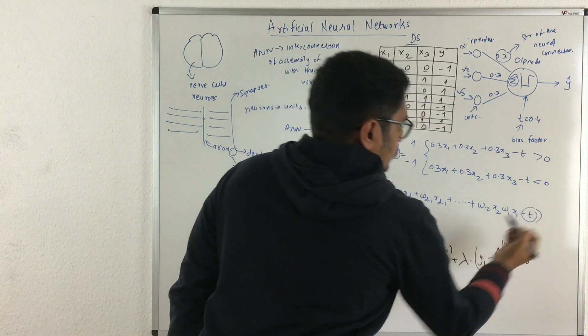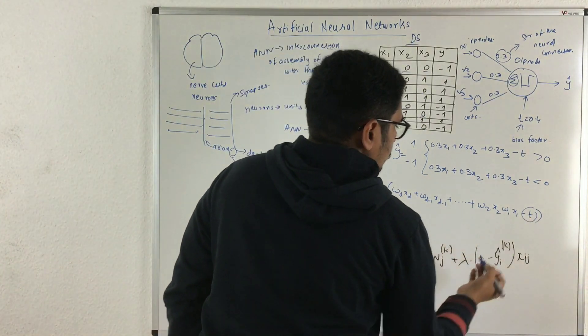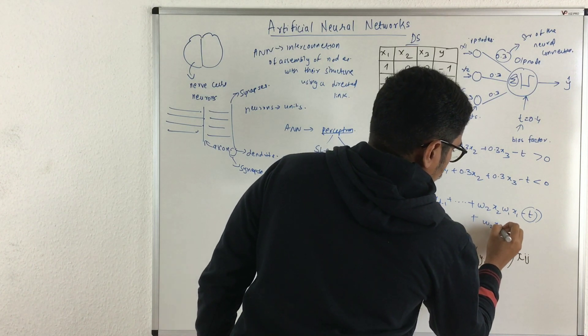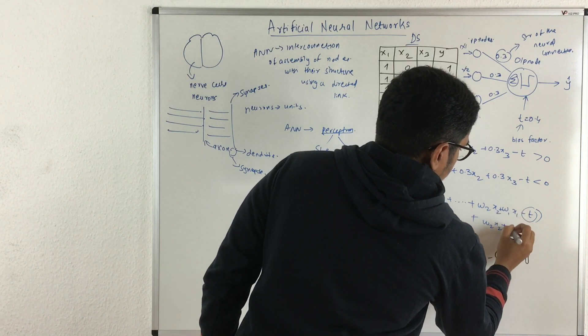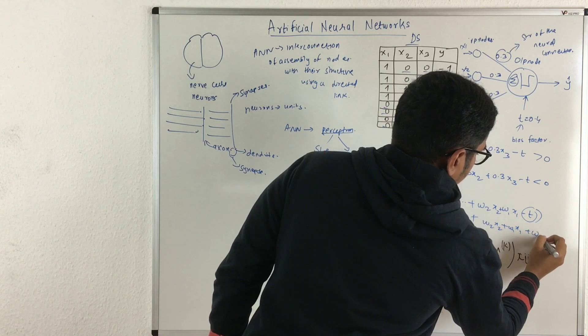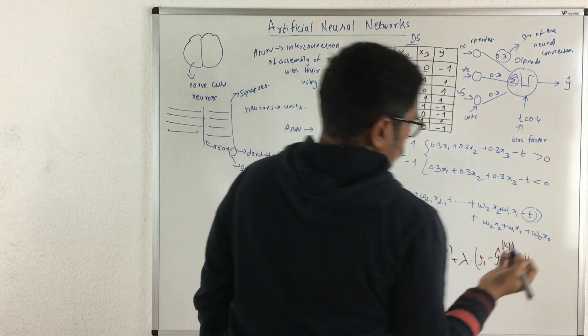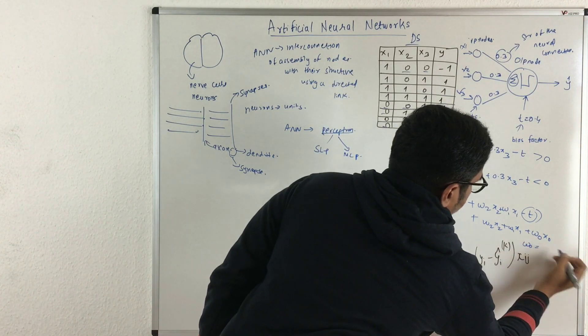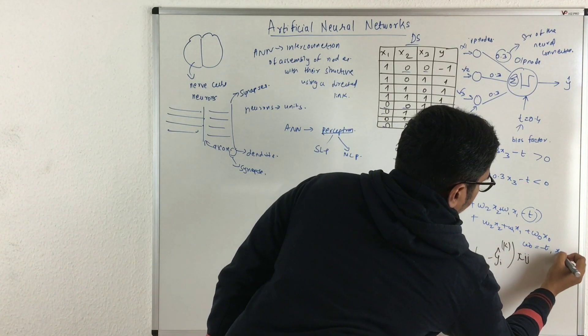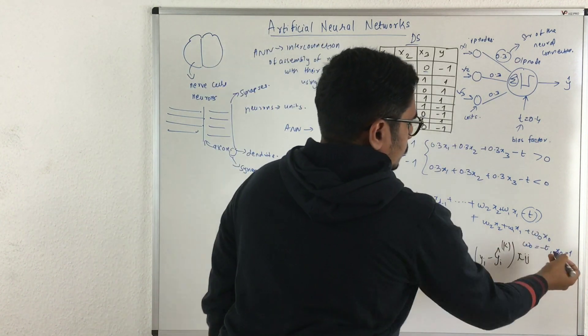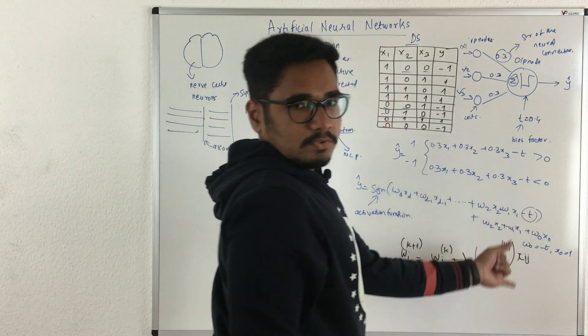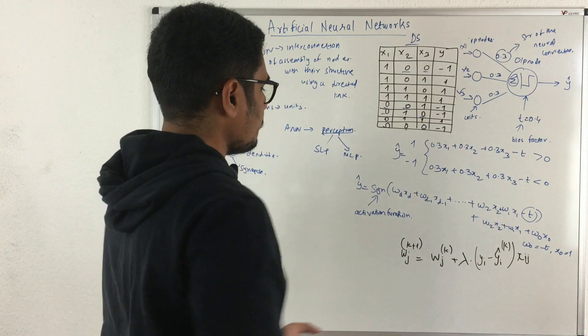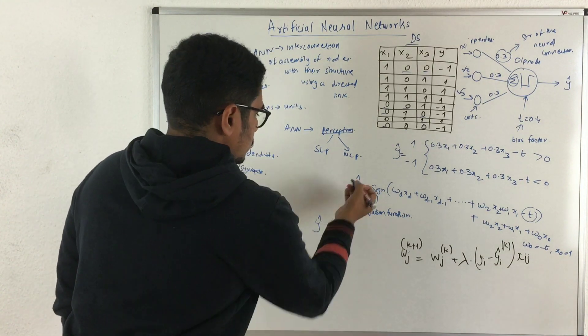This can be even simplified. Everything remains the same up to w2·x2 + w1·x1, then this term can be represented as w0·x0. Here what you did is you considered the weight vector w0 to be minus t and x0 to be 1. When you substitute this here, you get w0·x0. This is the more simplified or compact representation of this output function.